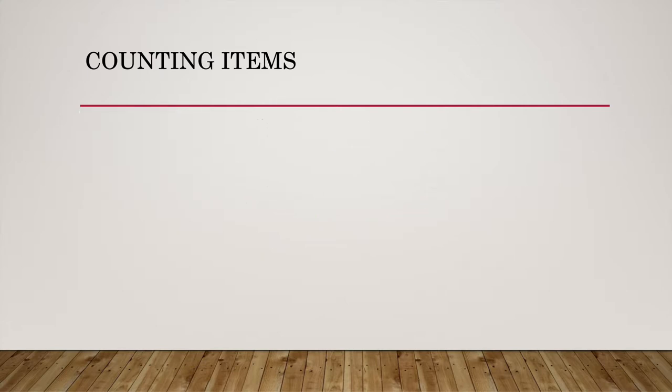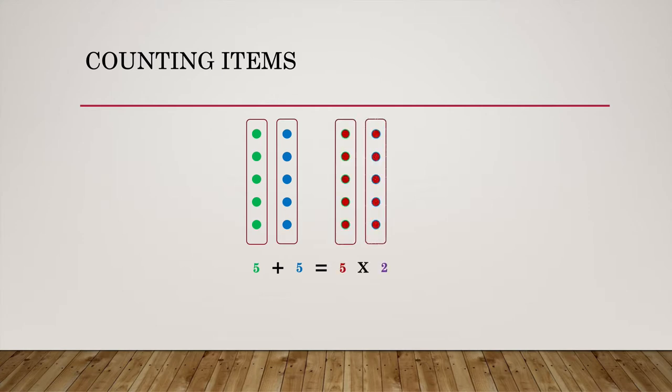So let's see what that looks like. Again, we're still counting. So let's say we have five items in this group and another five in this group. We know that we can add them. Well, we can also write this as a multiplication by saying that we have five items in a group times